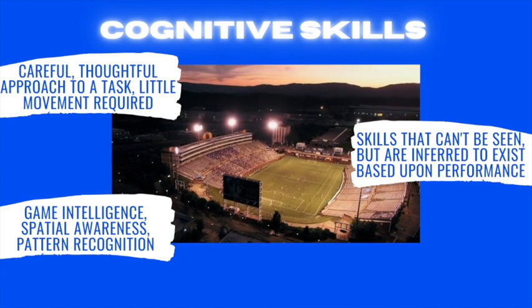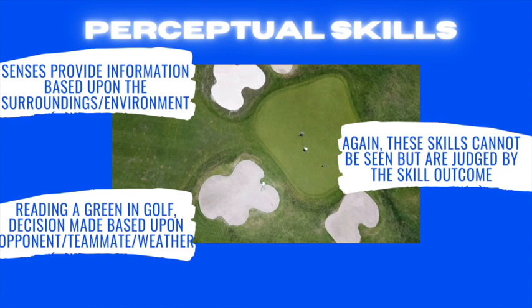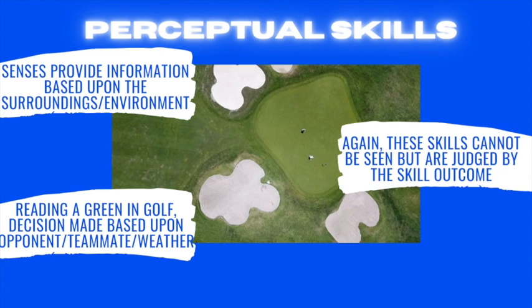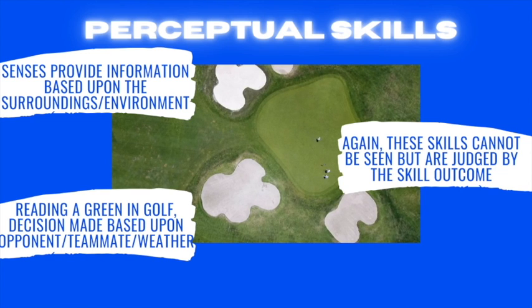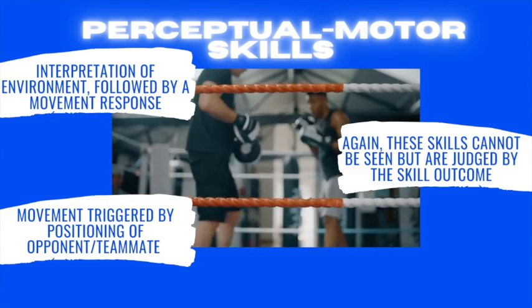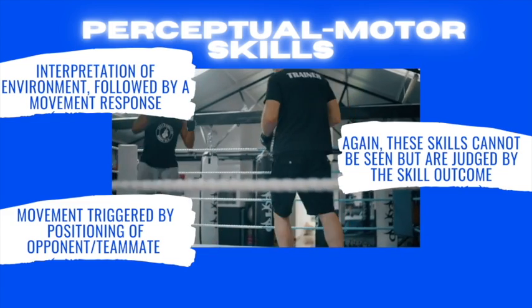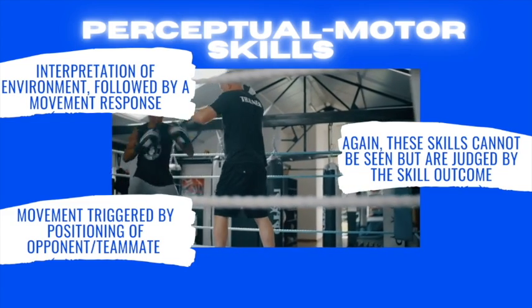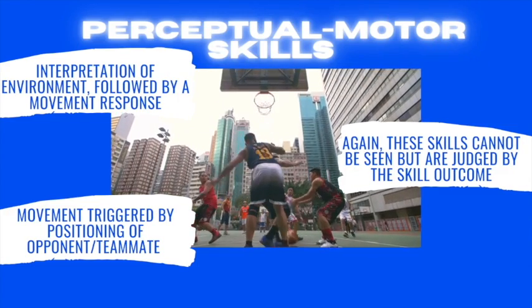Perceptual skills are a little bit different — you're judging what you can see and perceive. So a golfer from a bird's eye view is in the bunker, the rough, the fairway or the green, and the slope of the green; there are many things that need to be decided upon before a skill can be played. And lastly, perceptual motor skills — very common in sport. You interpret the environment and then follow it with a movement response, triggered by the positioning of your opponent or teammate.